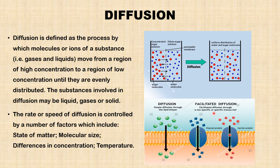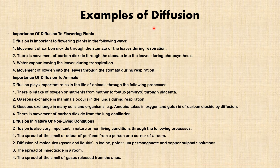Facilitated diffusion is another type of diffusion. It occurs through non-specific or specific transport using a protein carrier or protein channel. You can see there is a channel through which the substance moves from the region of high concentration to the region of low concentration. In this case, there is a carrier protein that carries the substance from higher concentration into the cell, which has a lower concentration of the same substance.